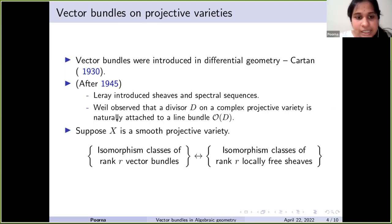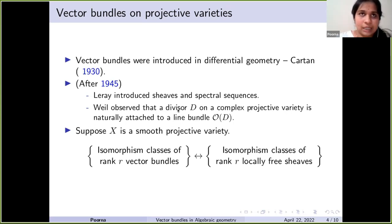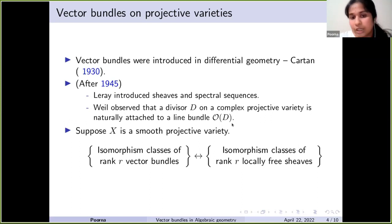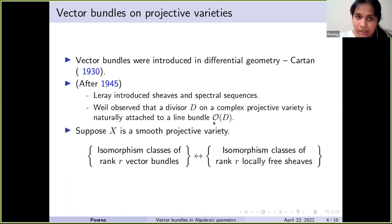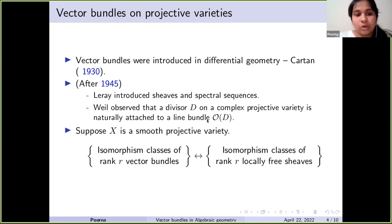On a compact complex manifold, a divisor D is a codimension-one submanifold. Given a codimension-one submanifold, we can naturally associate a line bundle to it — if the submanifold is D, the line bundle is denoted O(D). Conversely, if we have a line bundle on a compact complex manifold with enough global sections, the vanishing of each global section defines a codimension-one submanifold. This correspondence was observed by Weil, and people noticed that vector bundles encode a lot of geometric information.